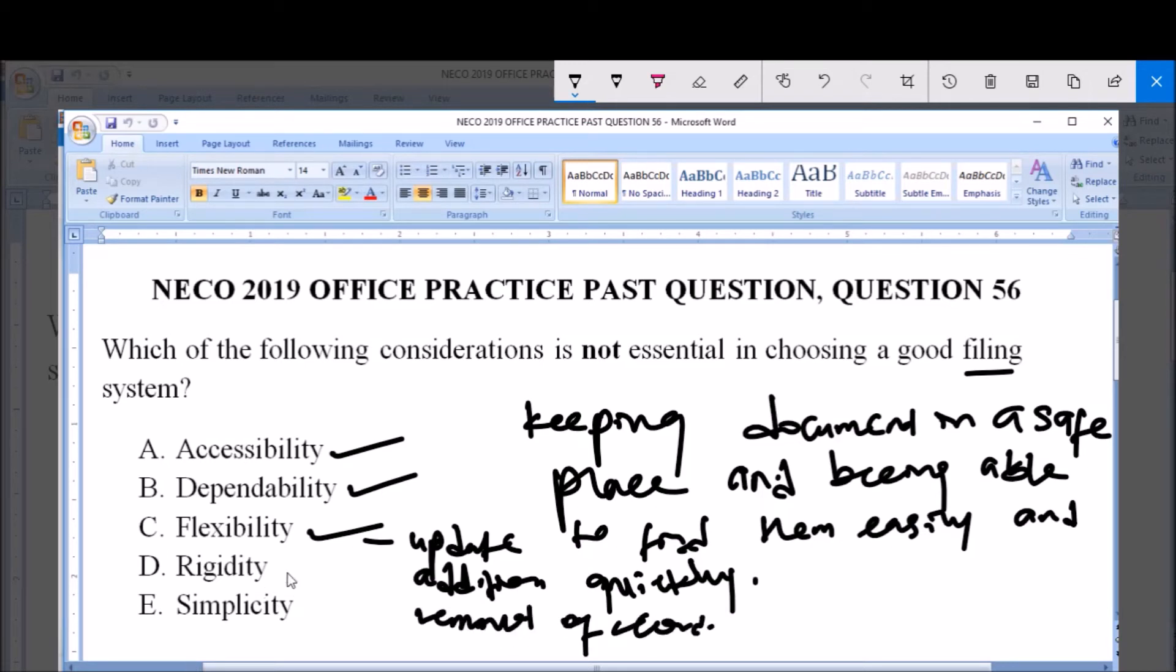D. Rigidity. A good filing system should not be more rigid because rigidity simply means that there will be no chance for update, addition or removal of record.